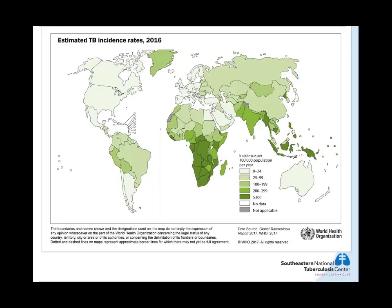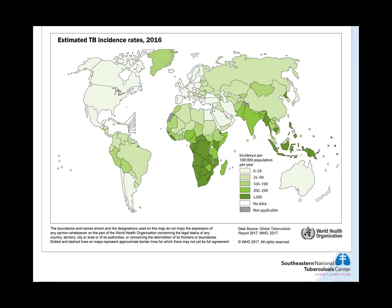On this map, you can see in dark green the countries that have rates more than 300 cases per 100,000 population. Most of these countries are from Africa, especially Sub-Saharan Africa, and some from Southeast Asia. In the Americas, there are no countries with similar rates. However, based on the number of cases instead of the rates, Brazil is on the list of high burden countries in the world. And Peru is on the list of countries with the highest number of MDR-TB cases in the world.